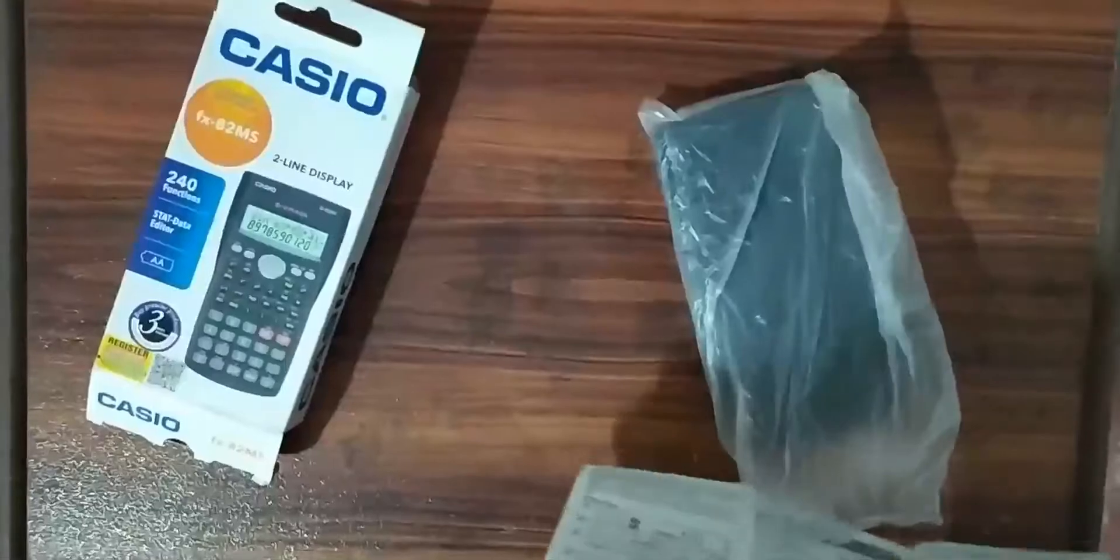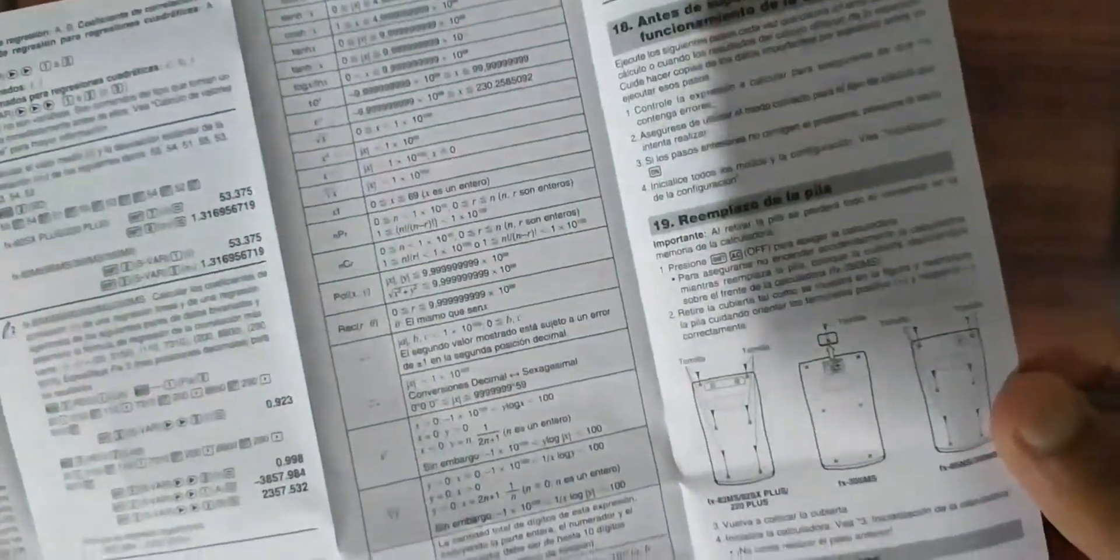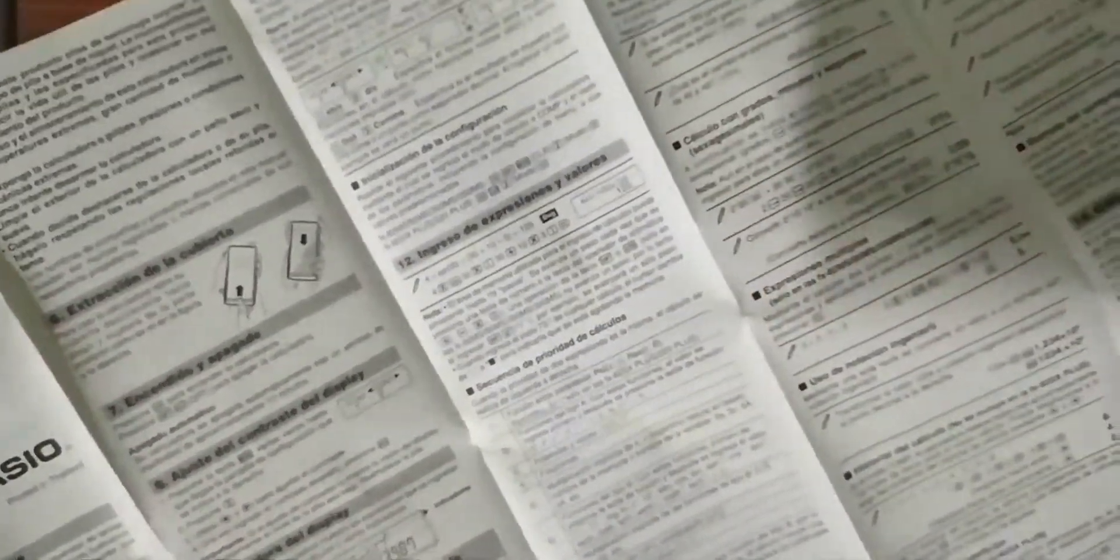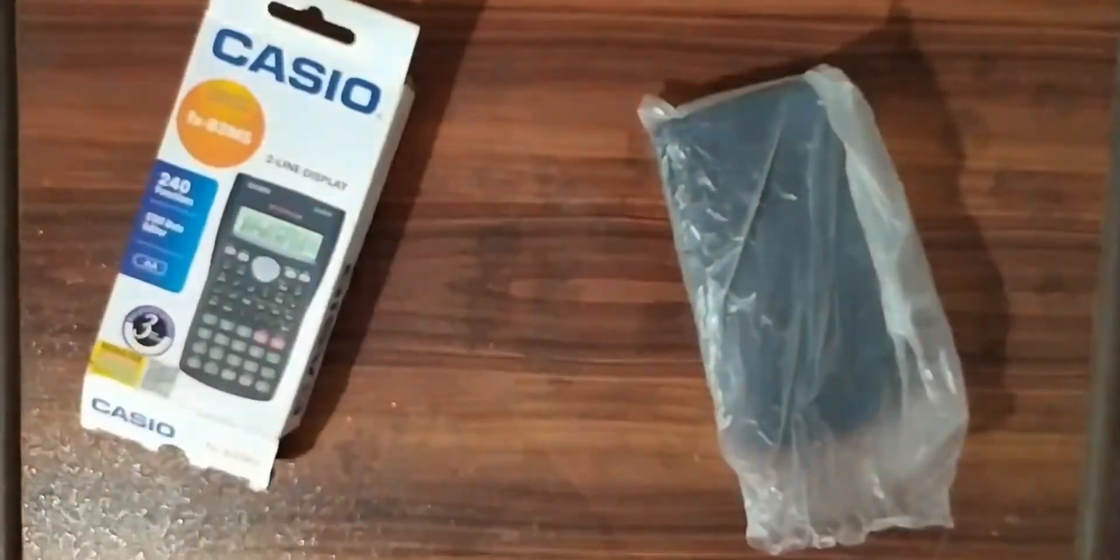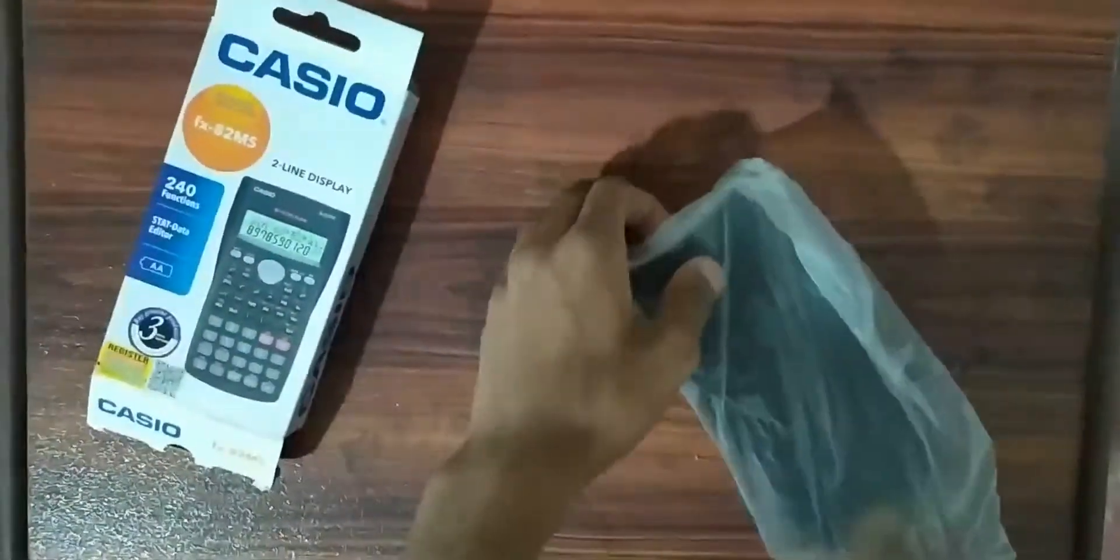This user guide is in Spanish. The way to change the batteries is also mentioned. This same user guide can be used for a wide range of Casio Scientific Calculators.